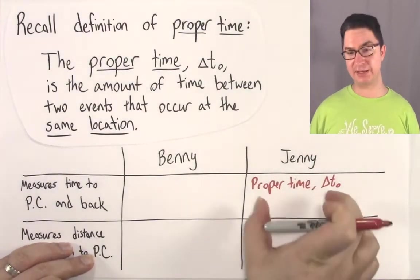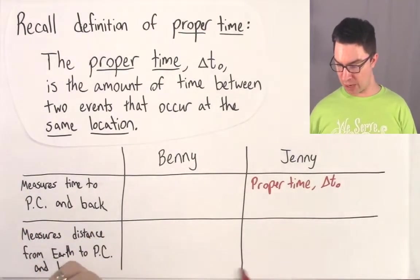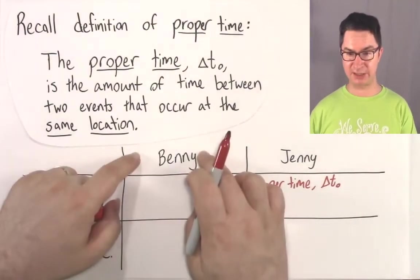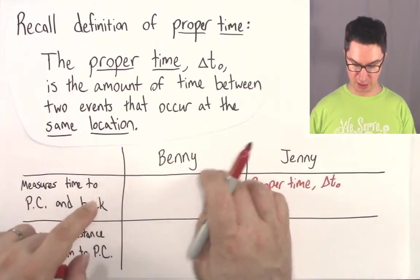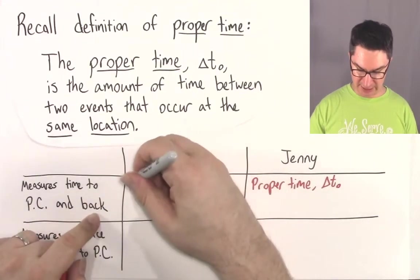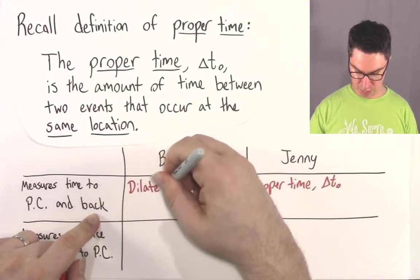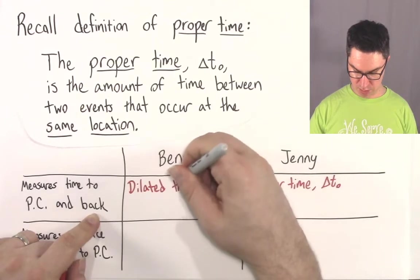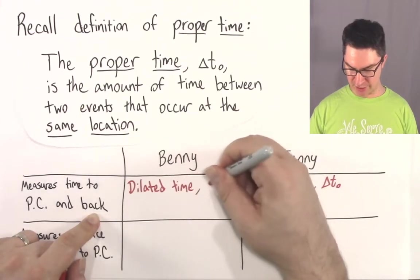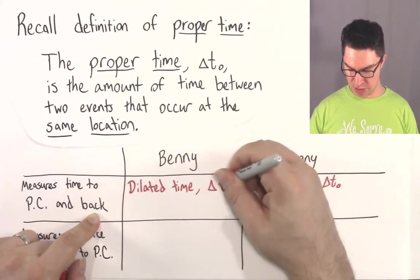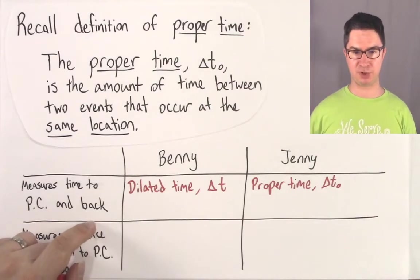We'll calculate this time in a second. If Jenny measures the proper time, then Benny is going to measure the dilated time delta T.